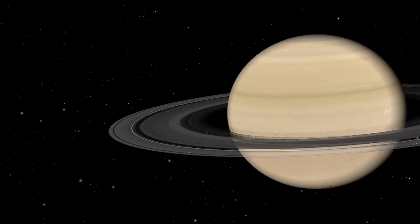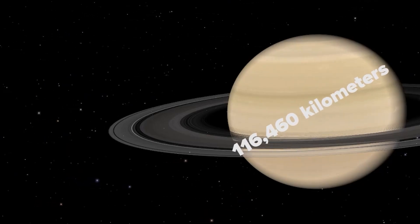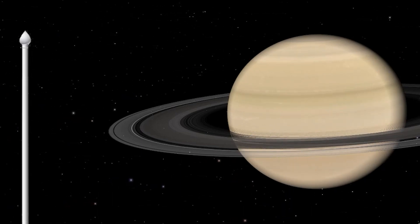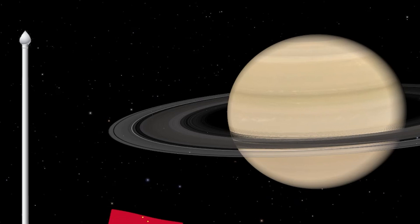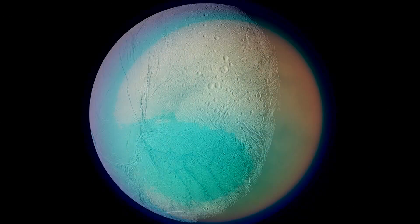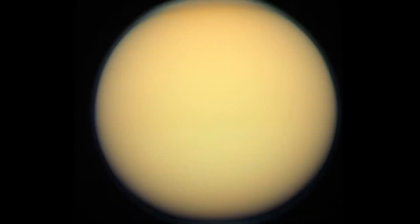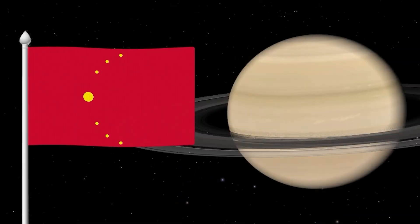The second largest planet in the solar system with a diameter of about 116,460 kilometers is Saturn. On the flag I decided to depict Saturn's seven largest moons, Mimas, Enceladus, Tethys, Dione, Rhea, Iapetus and Titan, which is slightly larger than the other moons.